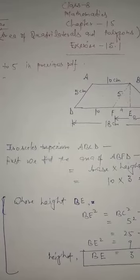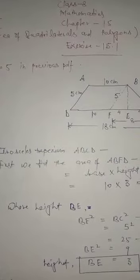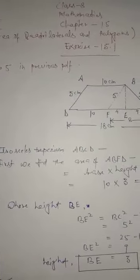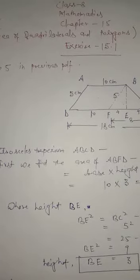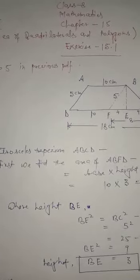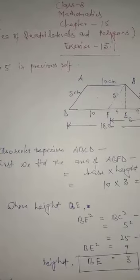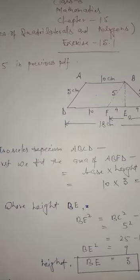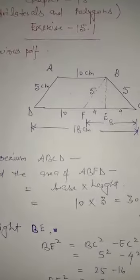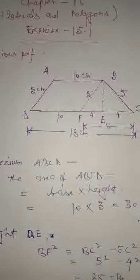Question number 6: An isosceles trapezium ABCD has parallel sides 10 centimeter and 18 centimeter. Its non-parallel sides are 5 centimeter each. Find its height and area.